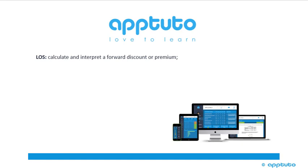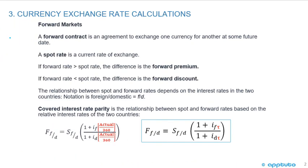This LOS is to calculate and interpret a forward discount or premium. We've seen this slide before, but we're going to do it again — that's how we get good at this, we practice. When looking at forward markets, a forward contract is an agreement to exchange one currency for another at some future date. The spot rate is the current rate of exchange. If the forward rate is greater than the spot rate, the difference is the forward premium; if the forward rate is less than the spot rate, the difference is a forward discount.